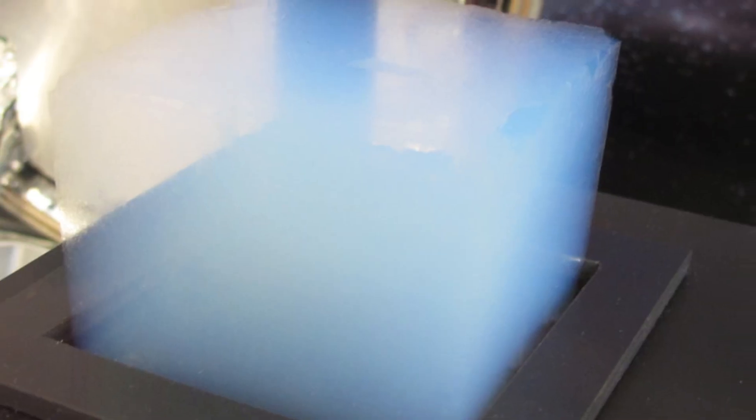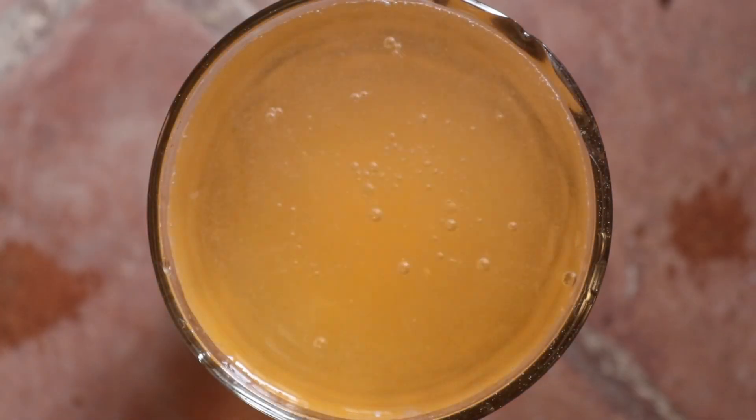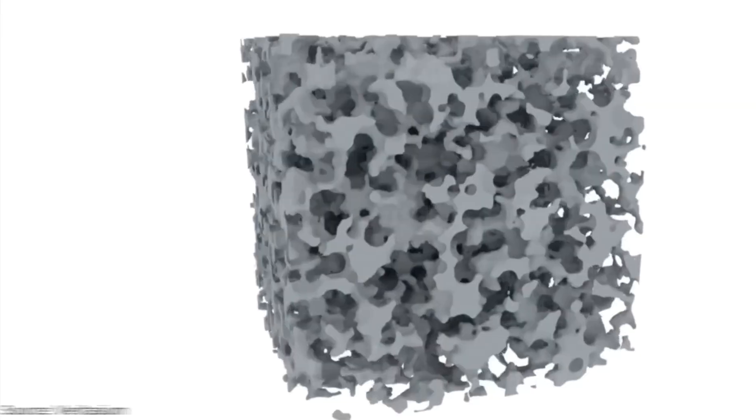It's called aerogel and it's remarkably transparent and is one of the coolest materials I've ever seen. This video is all about aerogel from how it's made, what it is, and the absurd things it can do.